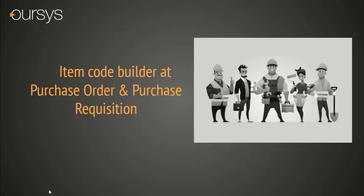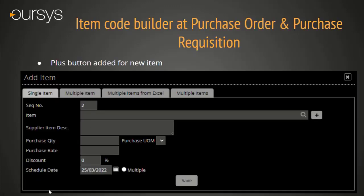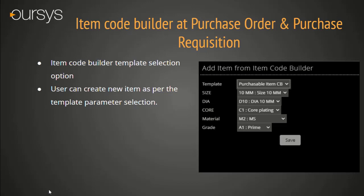Item Code Builder at Purchase Order and Purchase Requisition level. This is a very user-friendly feature we have introduced for specific industries or those who use our Item Code Builder Master for creating items as per requirements and parameters. In a single item tab, in front of the item dropdown field, you can see a plus button. Once you click the plus button, system shows the Item Code Builder template screen. Here the user can select the parameter and click Save button. Once saved, the system creates the item master and the code automatically shows in the item dropdown for further use.